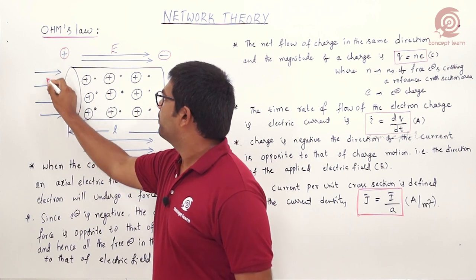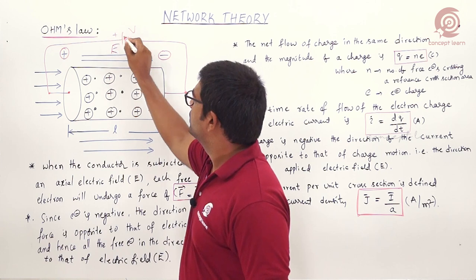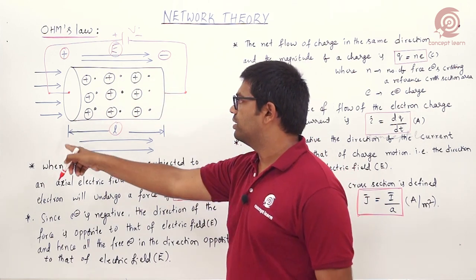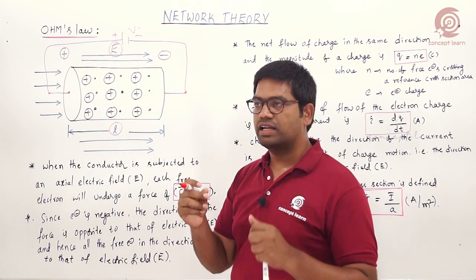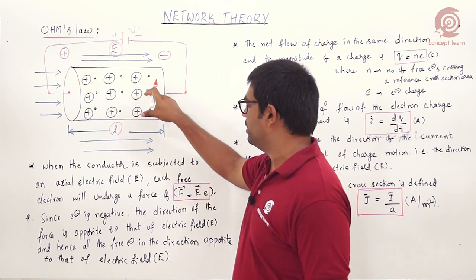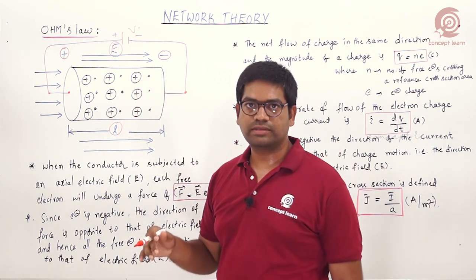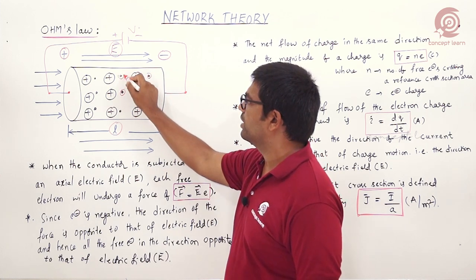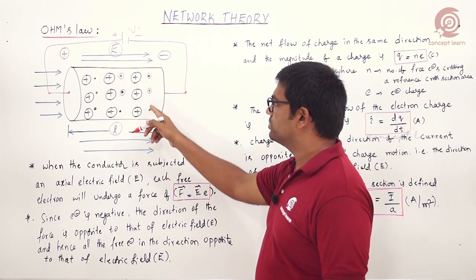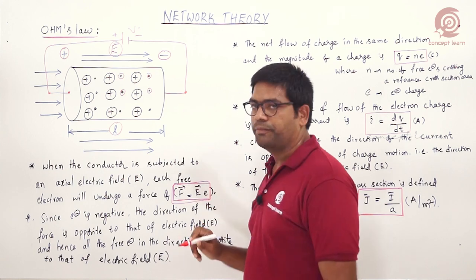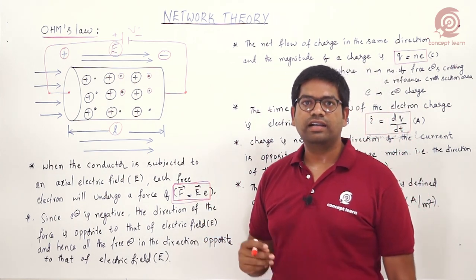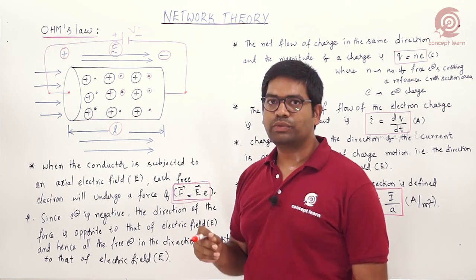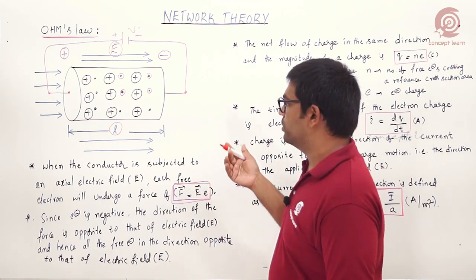If I consider two terminals of this conductor and apply a voltage, the electric field equals voltage per unit length. I am applying the electric field in the axial direction, considering the conductor in the form of a cable. When the conductor is subjected to an axial electric field, each free electron undergoes a force F = eE, where e is the electron charge and E is the electric field.